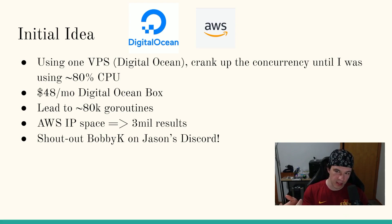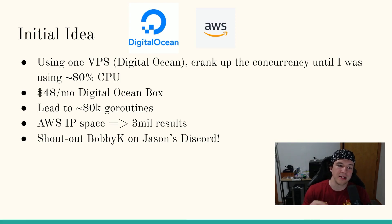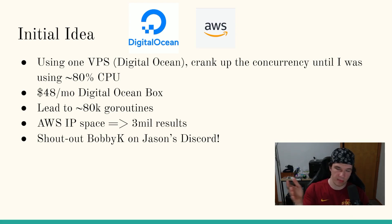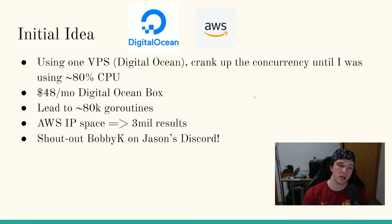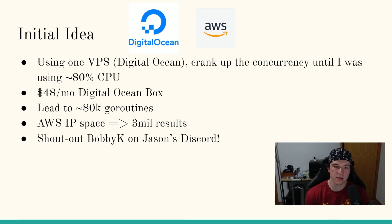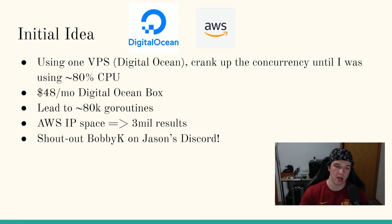The initial idea was to use a VPS in DigitalOcean and basically take the concurrency flag on the tool, which adds more and more Go routines that try to read certificates faster. I would crank up the concurrency until it was using around 80% of the CPU so it wouldn't max out the box. I started with a $48 a month standard shared DigitalOcean VPS, which let me run anywhere from 80,000 to 95,000 Go routines before hitting that 80-90% CPU usage.